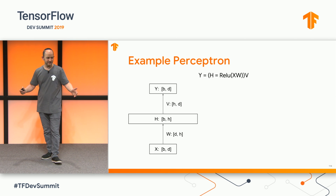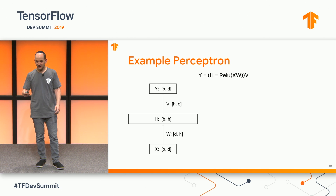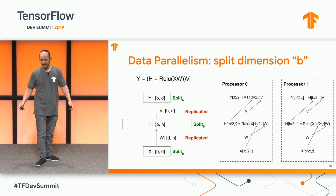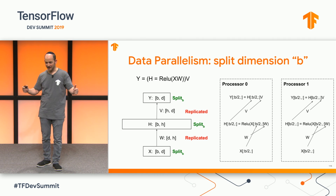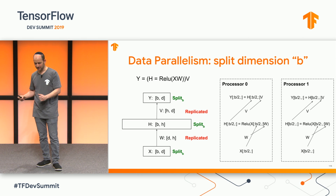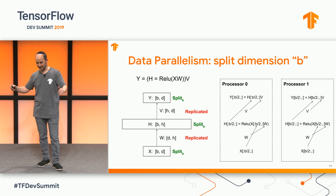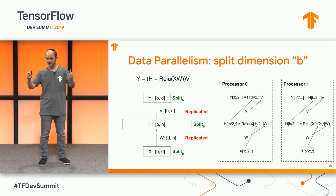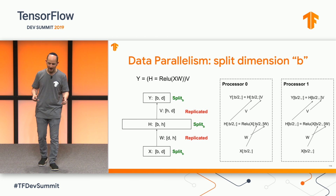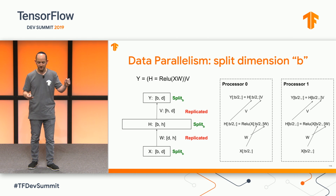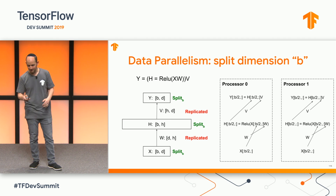Let's do an example: a simple three-layer neural network with input layer X, hidden layer H, output layer Y, and two weight matrices W and V. The data parallel way is to split anything with a batch dimension — meaning the activations X, H, and Y — evenly across processors, while tensors without a batch dimension, W and V, are replicated across every processor. Each processor is doing something roughly similar except with different halves of the activations. You don't see communication in the forward pass, but in the backward pass where you're computing parameter gradients, you'd see matrix multiplies where the split dimension B gets reduced out, and there would be some all-reduces.